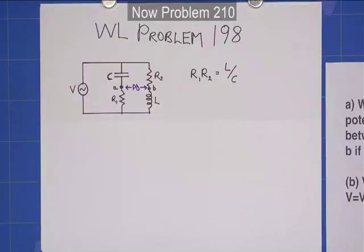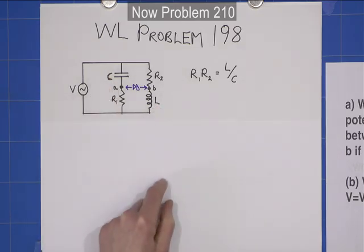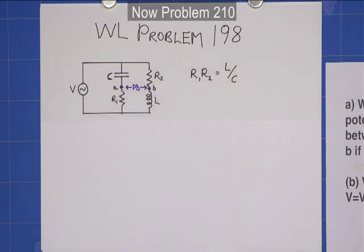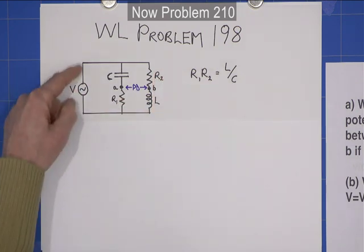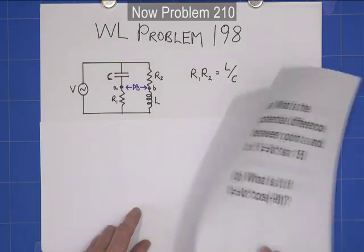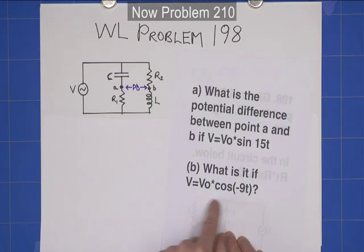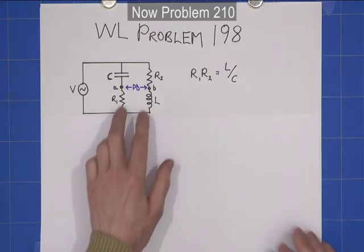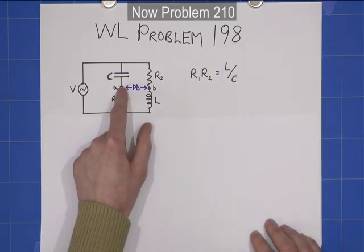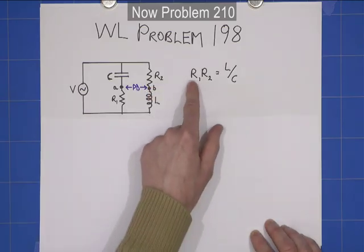So, if you're ready, I am ready. This is Keith's solution to Walter Lewin's problem 198. It concerns a simple circuit with a capacitor, an inductor and two resistors. And for a given input voltage which varies — we're actually given the formulae for the two varying voltages that we need to consider — we're asked to calculate the potential difference between point A and point B. And we're also told that R1 times R2 equals L over C.